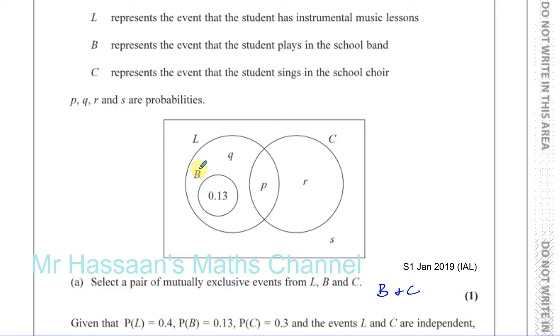You can see L and B have something in common. We can see L and C have something in common. But B and C have nothing in common. That's a pretty simple first question.